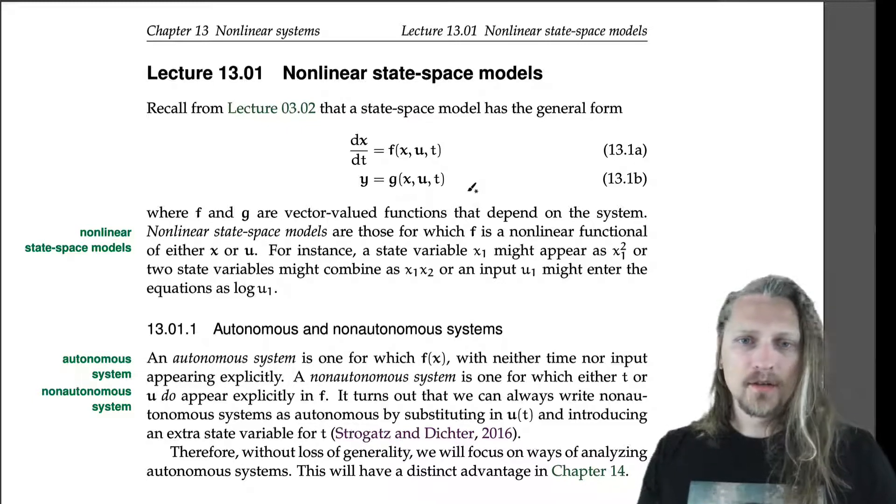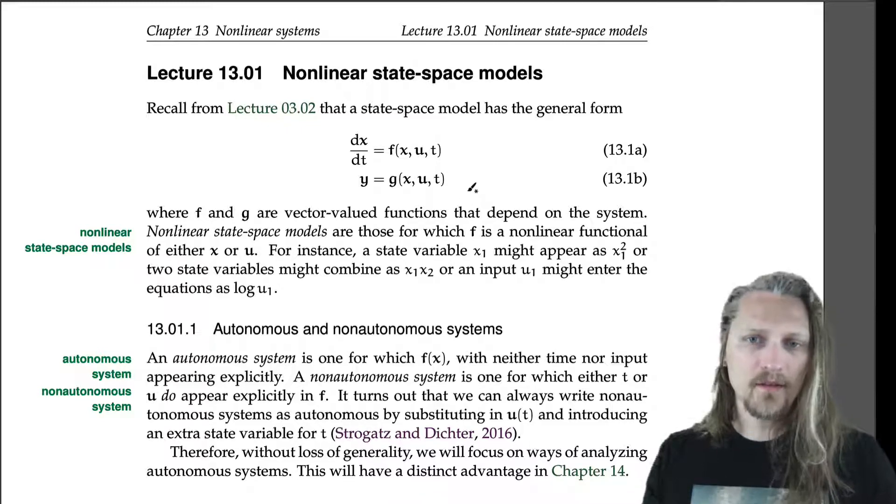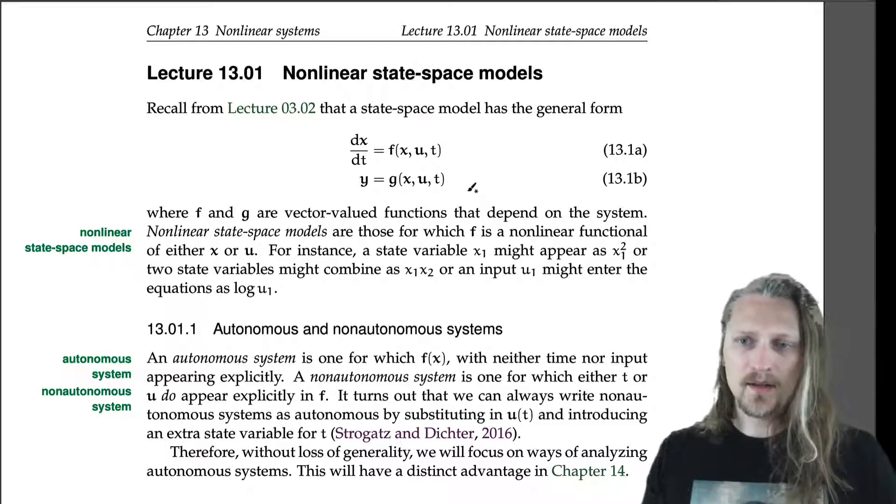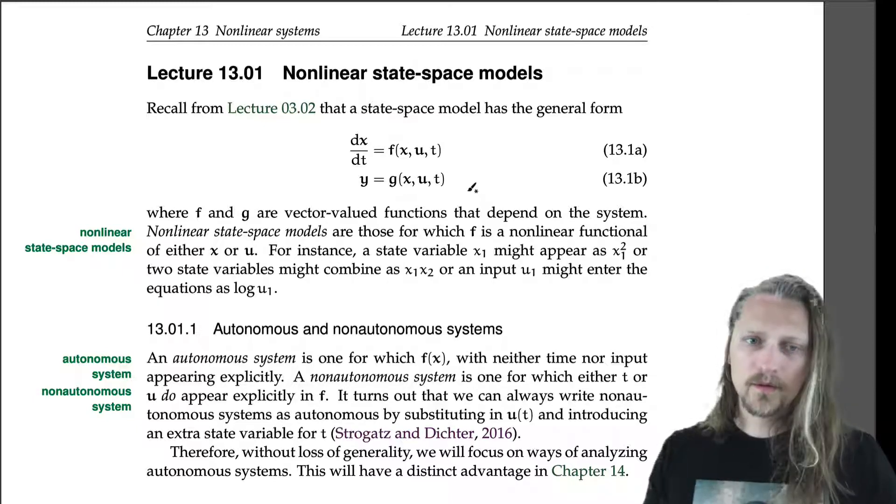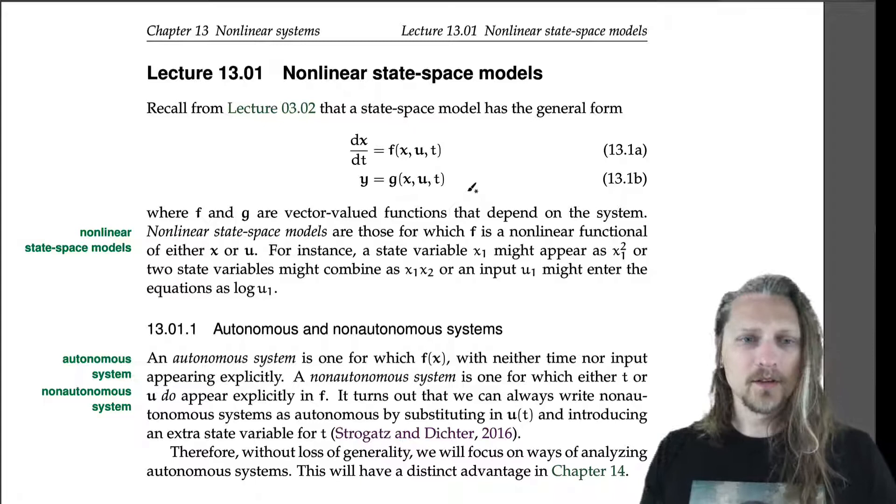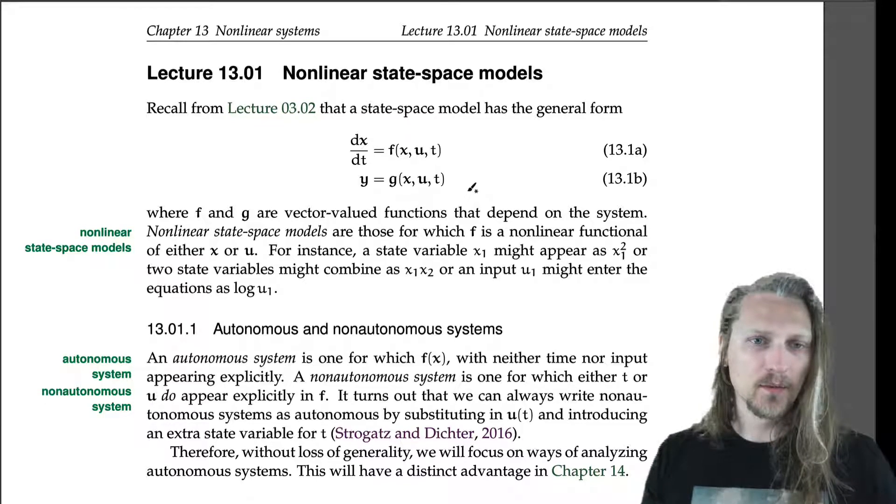Where f and g are vector-valued functionals that depend on the system. Nonlinear state space models are those for which f is a nonlinear functional of either x or u. For instance, a state variable x1 might appear as x1 squared, or two state variables might combine as x1 times x2, or an input u might enter the equations as log u1. These are just some examples. So far most of our models have been linear, and now we're going to consider what happens when those state space models are nonlinear.